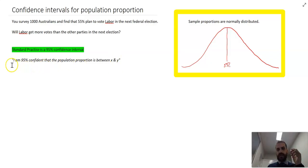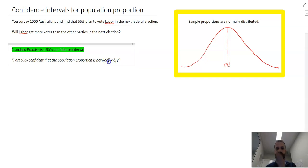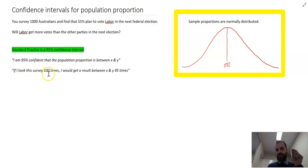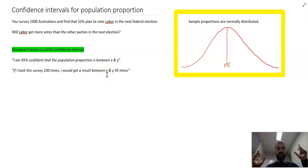A good way to think about confidence intervals is this sentence: 'I am 95% confident that the population proportion is between X and Y.' So my calculation might tell me I am 95% confident the population proportion is between 52% and 58%. Another way to say it: if I took this survey 100 times — surveying 1,000 different Australians each time — I would get a result between 52% and 58% ninety-five times. That also means five times out of 100, I'll get a sample outside those ranges.